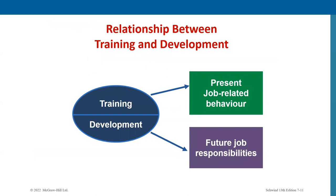Our book gives a simple classification: training focuses on present job-related behavior — offering training for new hires so they can work properly in their current position. Development, however, looks at the future: future job responsibilities. So development talks about preparing employees for future roles. A successful company keeps these two elements together — training for the present, development for the future.